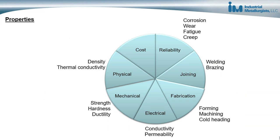When we talk about properties, a lot of people think about just mechanical properties — strength, hardness, and ductility. But when modifying composition and microstructure, we can influence other properties including electrical properties, ease of fabrication such as forming, machining, cold heading, and forging, joining properties like welding, brazing, or soldering, and also reliability properties such as behavior under corrosion, wear, fatigue, and creep.